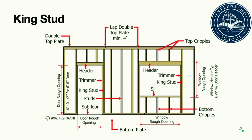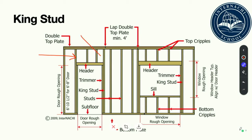King studs are connected or fastened to jack studs or trimmer studs. King studs are full-height studs that support the assembly between the top and bottom plates.